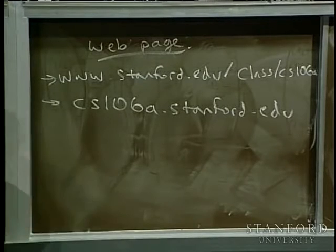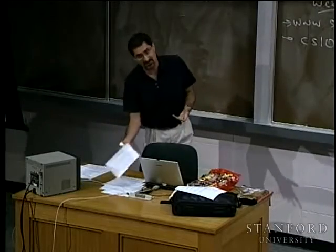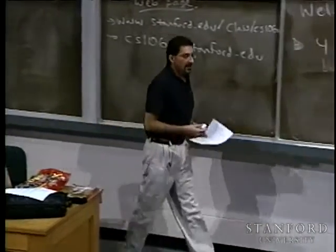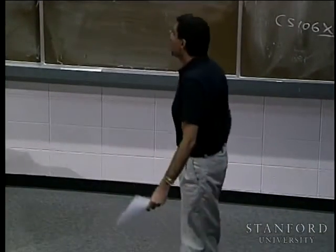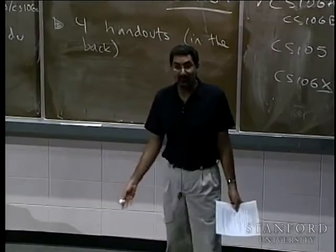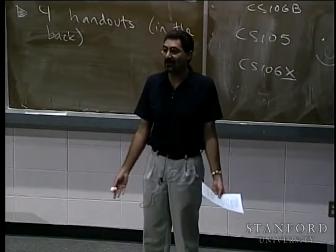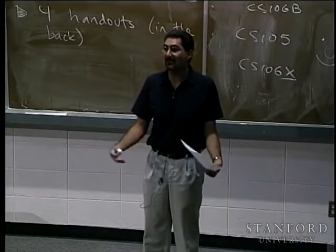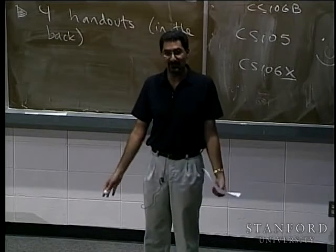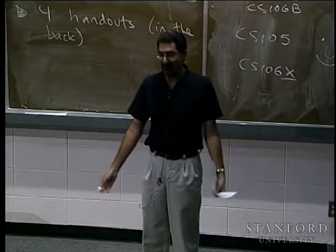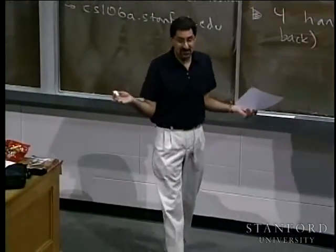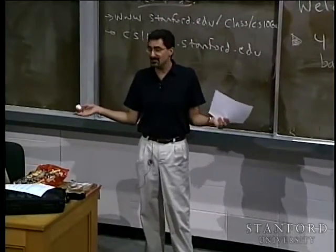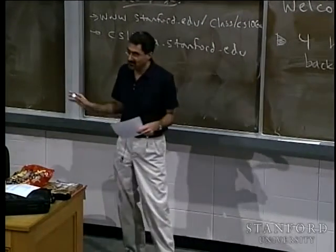About units: this class is three to five units. If you're an undergrad, you take it for five units — end of story. If you're a graduate student, you can take it for three units if you're running into a unit cap, though it doesn't change the amount of work you have to do. Welcome to graduate school: same work, fewer units.